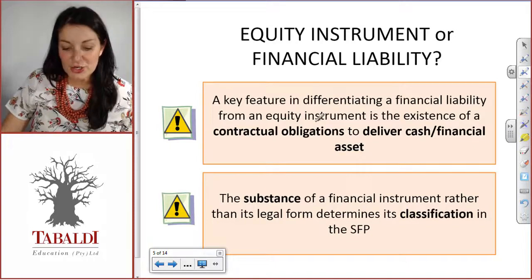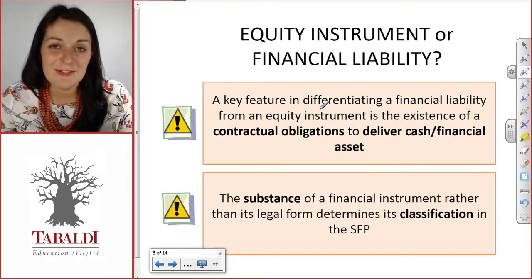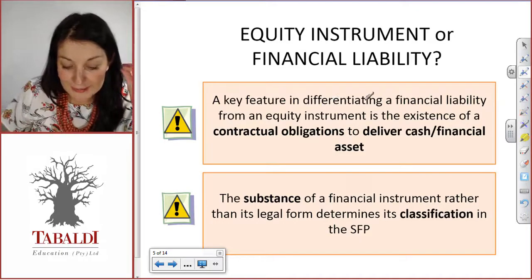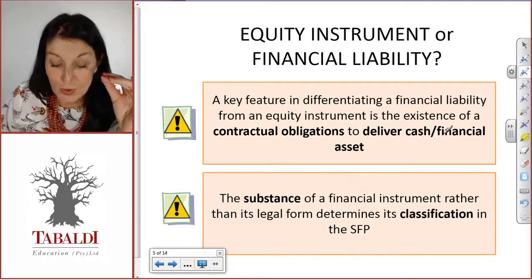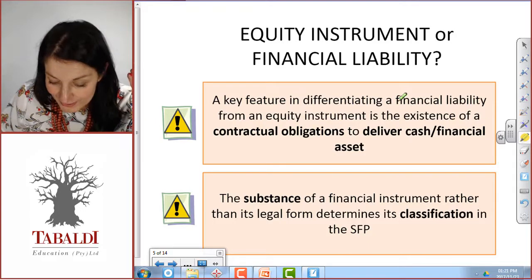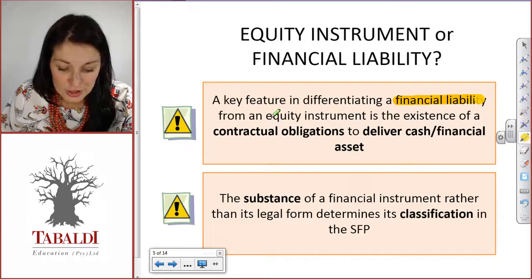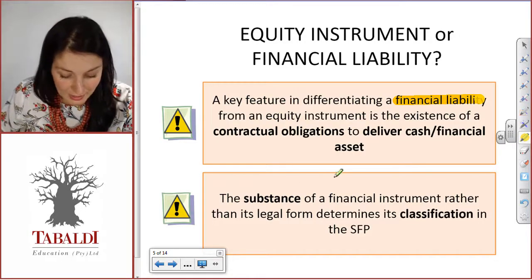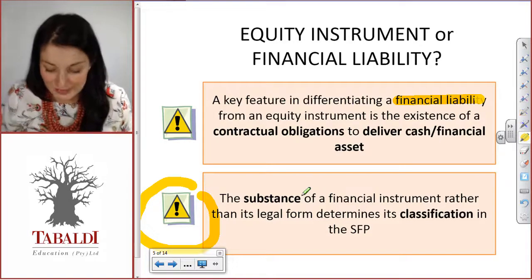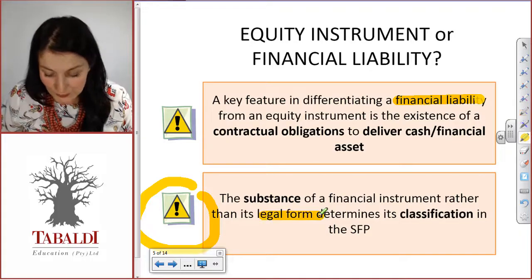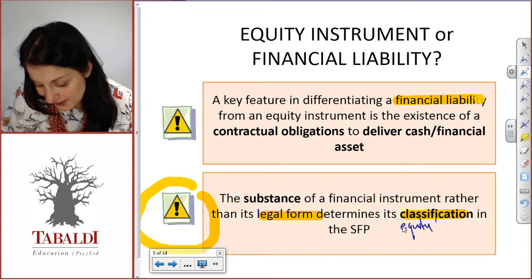Let's recap on the concepts you have to consider when you see these types of instruments and must determine if you're dealing with a financial liability or an equity instrument. The key thing that differentiates a financial liability from equity is the existence of a contractual obligation to deliver cash or financial assets. With a financial liability, you have that contractual obligation to give cash or financial assets, and you don't have that with an equity instrument.